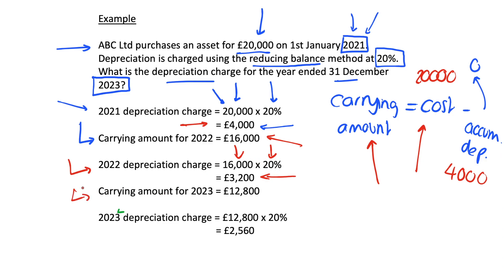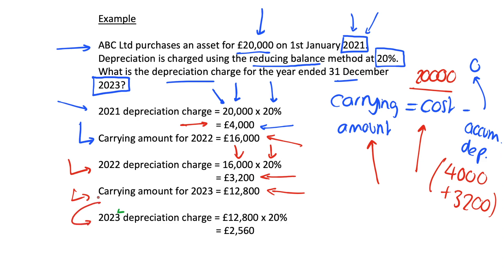For 2023: the carrying amount is £20,000 minus accumulated depreciation of £4,000 plus £3,200, which is £7,200 in total, giving a carrying amount of £12,800. The depreciation charge for the year ended 31st December 2023 is therefore £12,800 × 20% = £2,560.